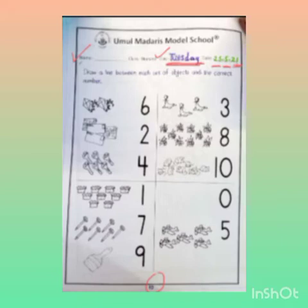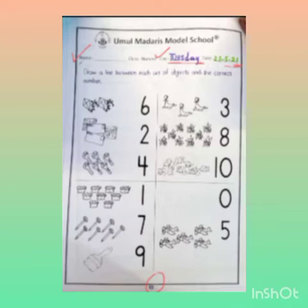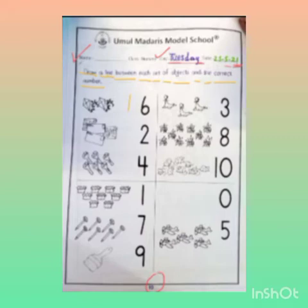G students, today our topic is: Draw a line between each set of objects and the correct number. जी बच्चो, अब हम again read करेंगे। मेरे साथ topic read करें: Draw a line between each set of objects and the correct number. जी बच्चो, यहाँ पर four sets दिये गए हैं।